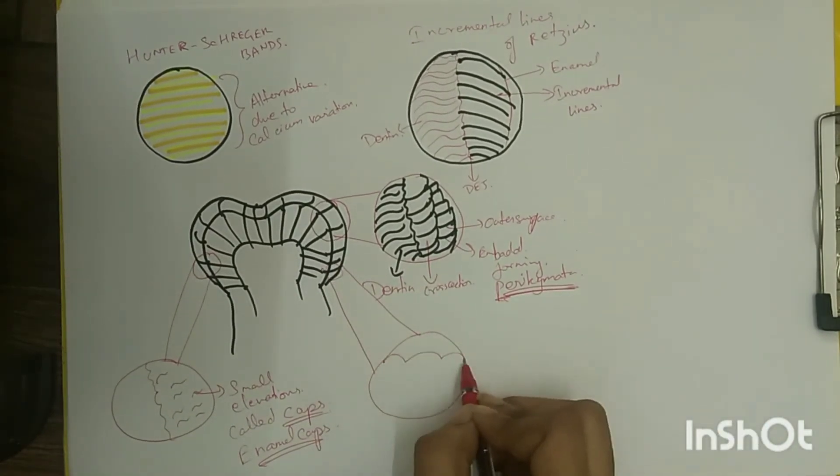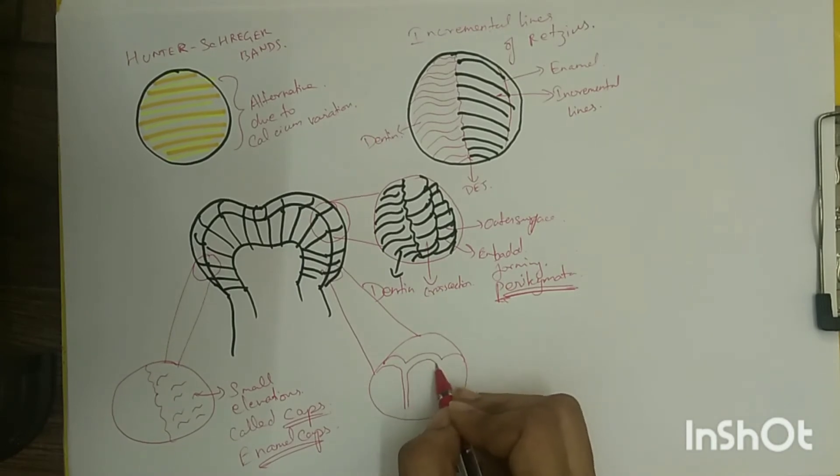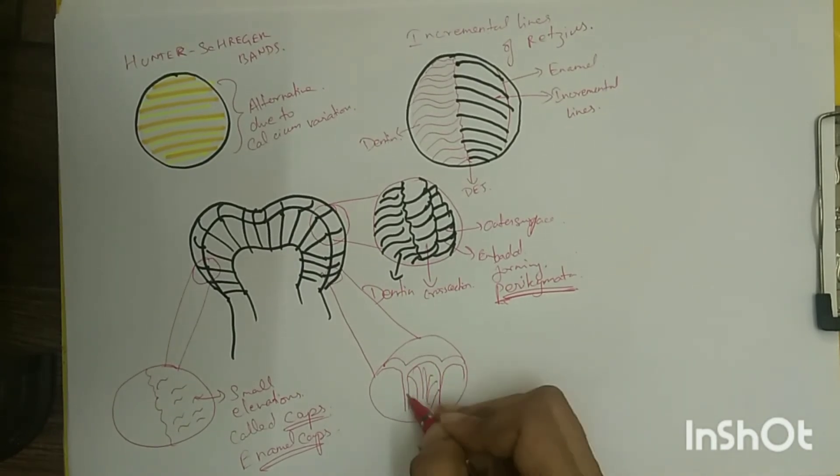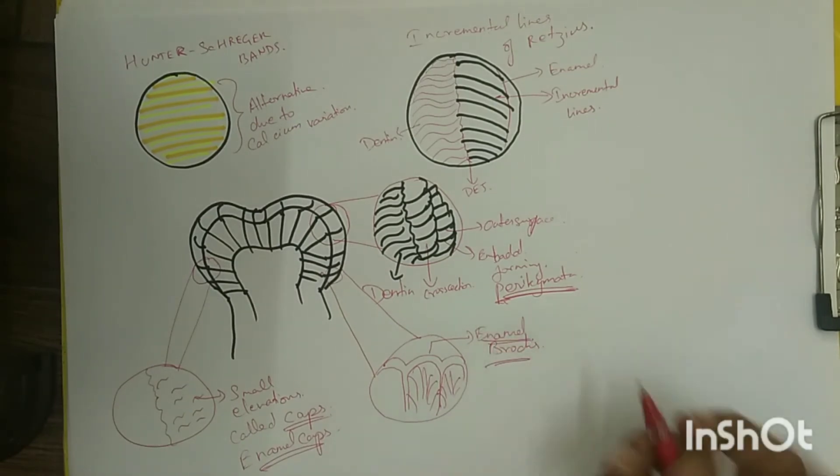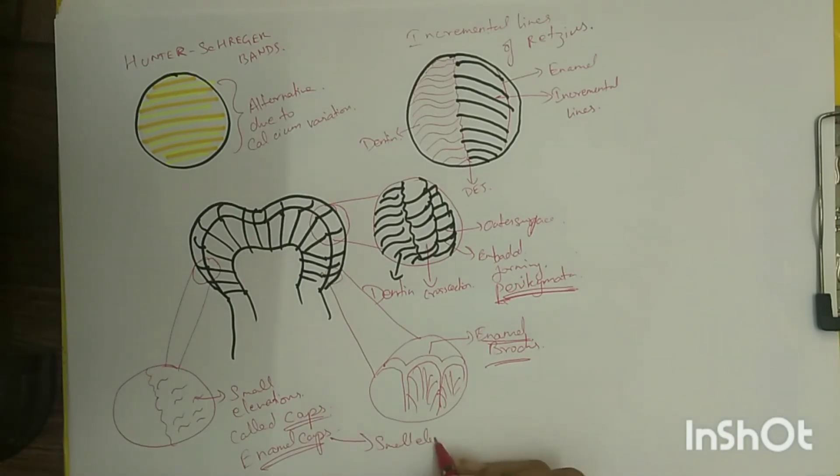Smaller elevations are called enamel caps, which measure about 10 to 15 nm in width, and larger elevations are called enamel broaches, which measure about 30 to 15 nm in width.